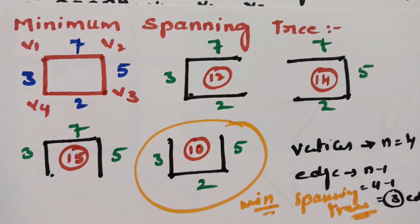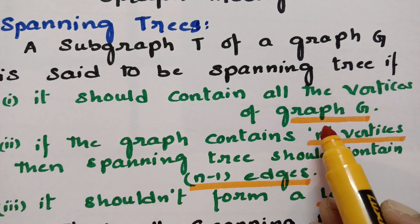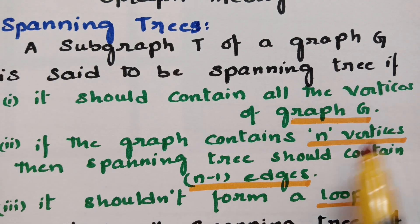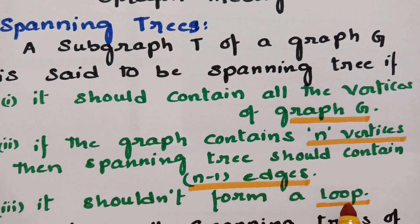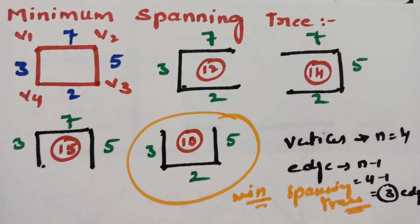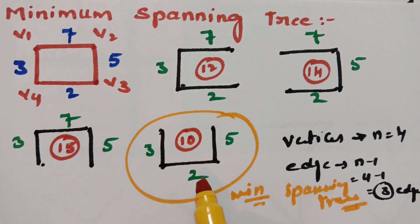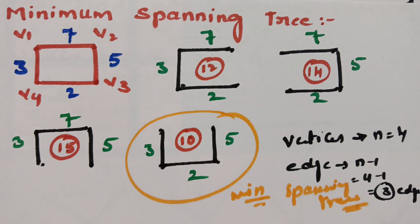It's very easy: find the main graph, ensure the spanning tree maintains all vertices, maintain n minus 1 edges, and ensure no loops are formed. However, finding all spanning trees manually is difficult, so there are algorithms for this — one is Kruskal's algorithm and the next is Prim's algorithm. I'll be posting how to solve the minimum spanning tree using those algorithms — hope you all understand, thank you for watching.